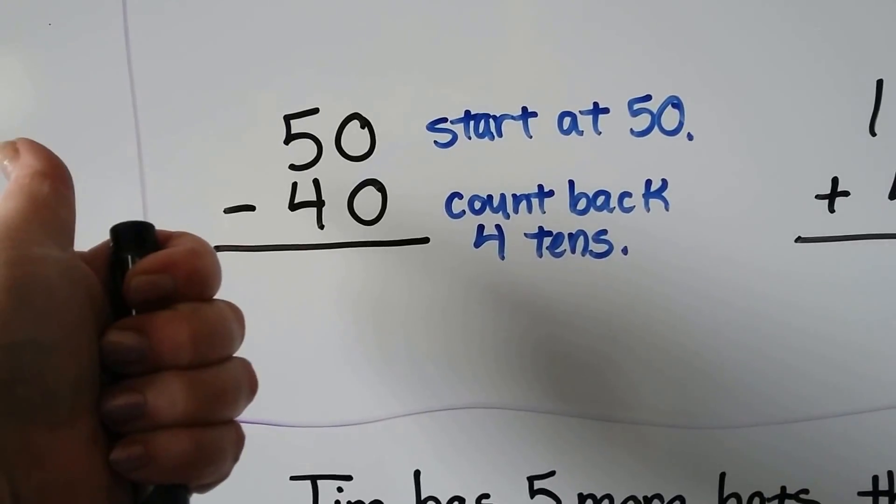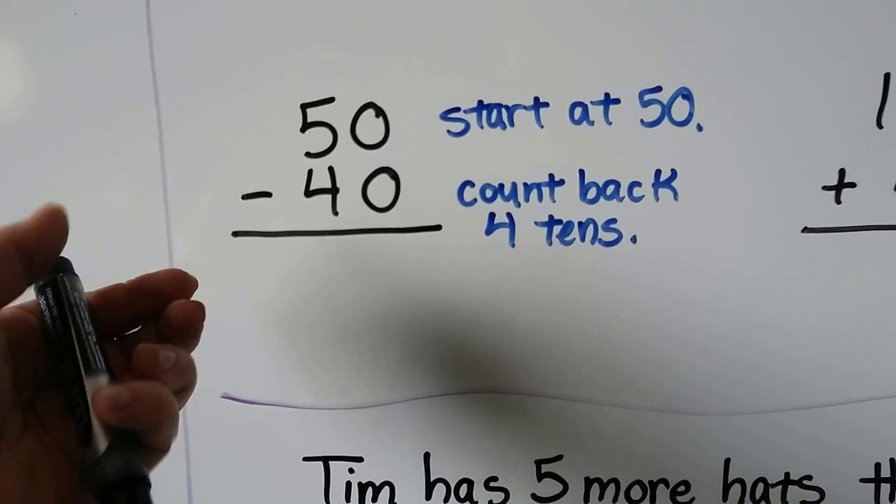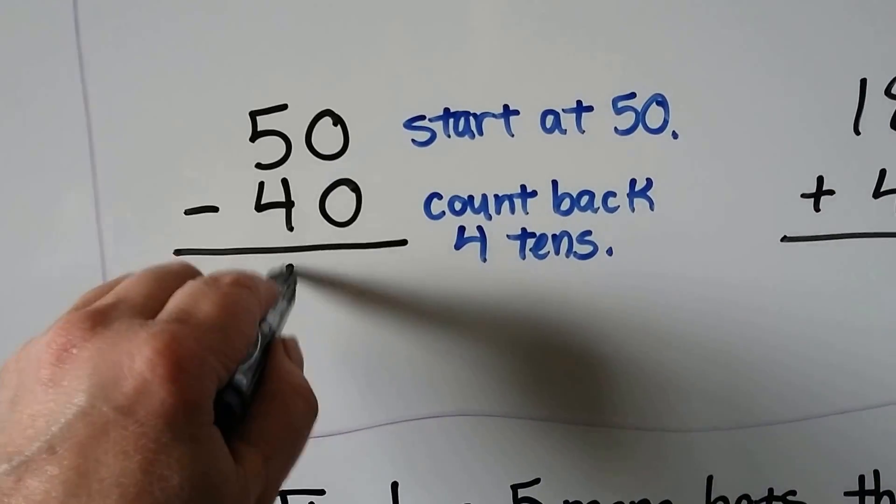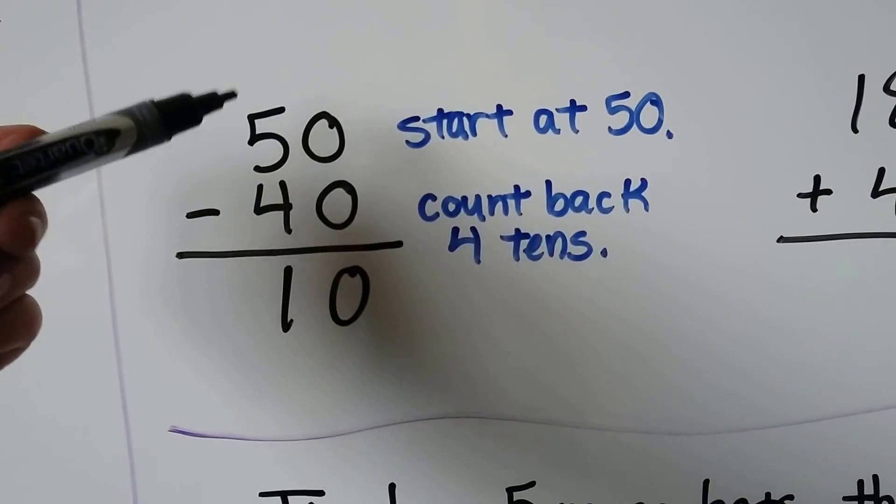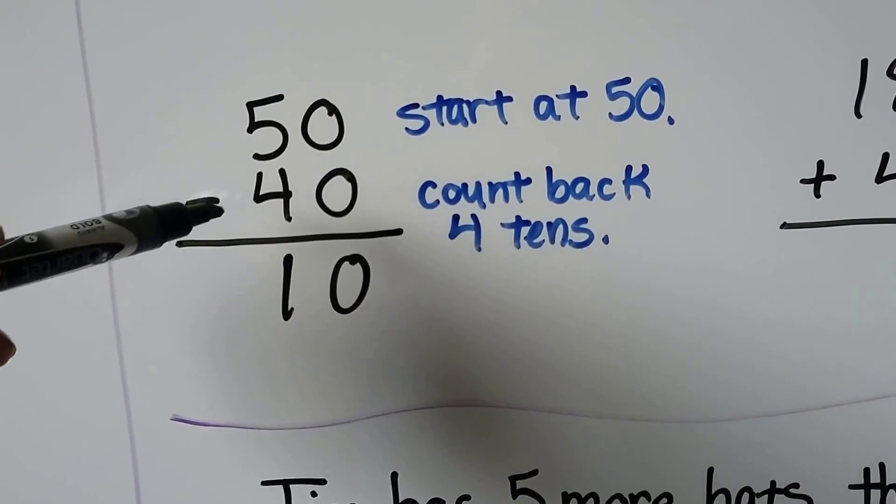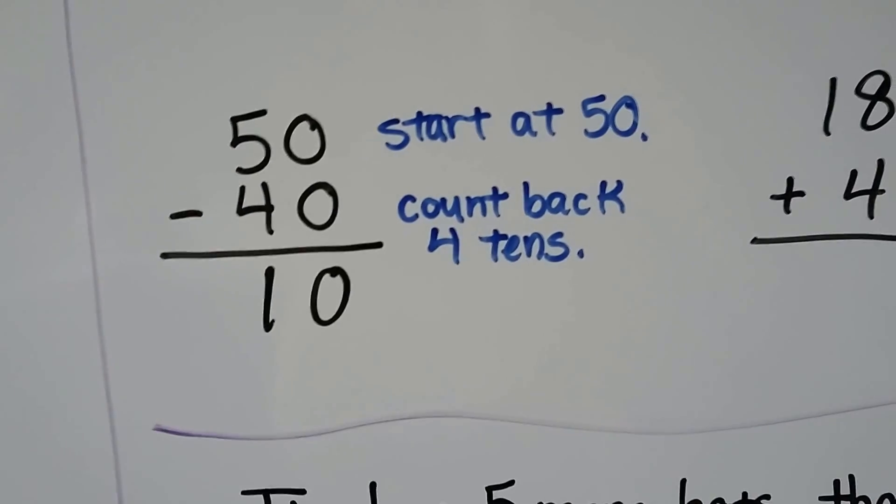This is 40 and 10 less is 30 and 10 less is 20 and 10 less is 10. If we do it with place value, 0 minus 0 is 0 and 5 minus 4 is 1 in the 10s place, we're left with 10.